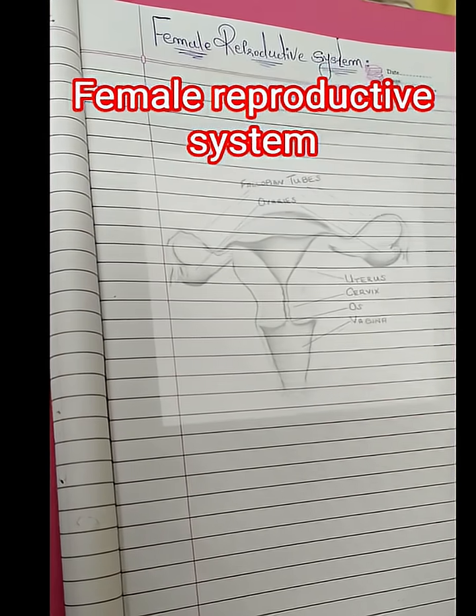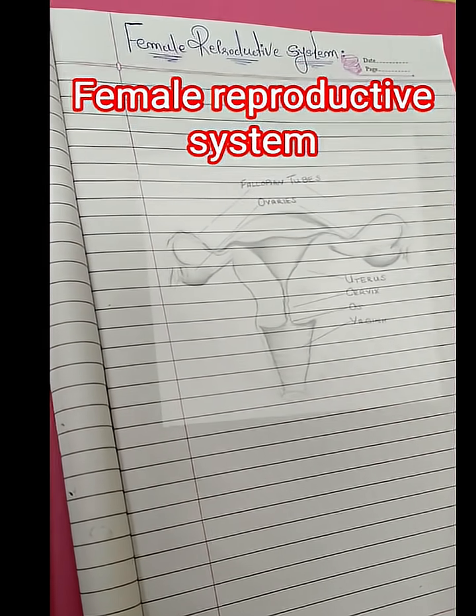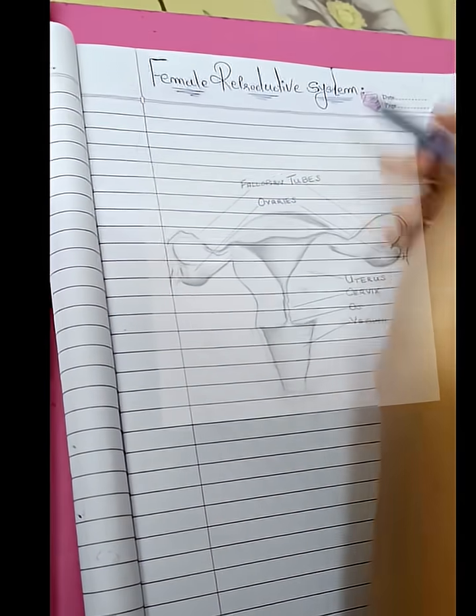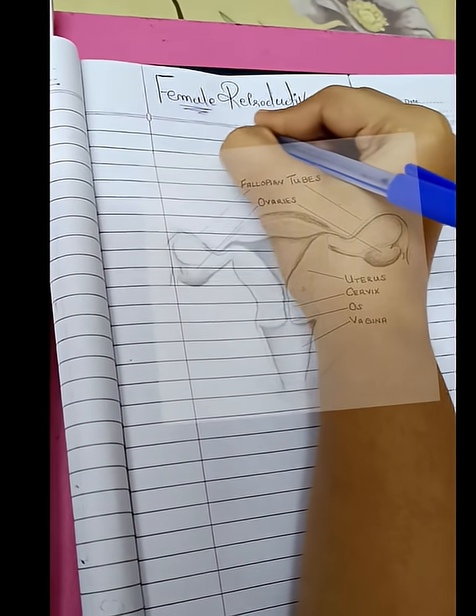Hello, welcome to my channel. Today we are going to study about the female reproductive system. The female reproductive system consists of three parts.